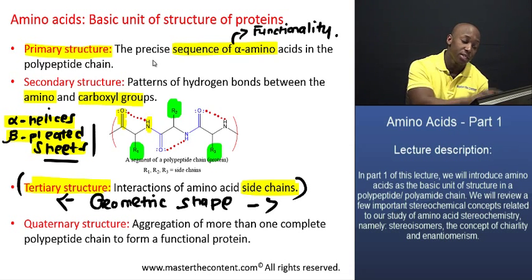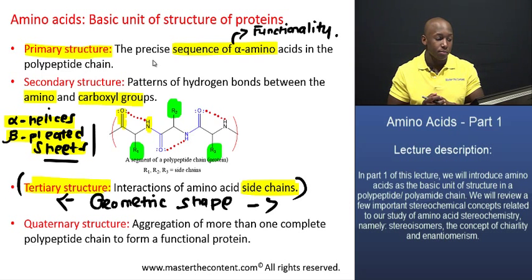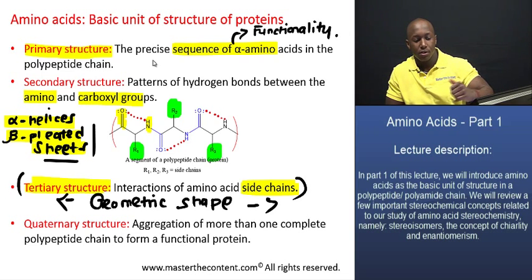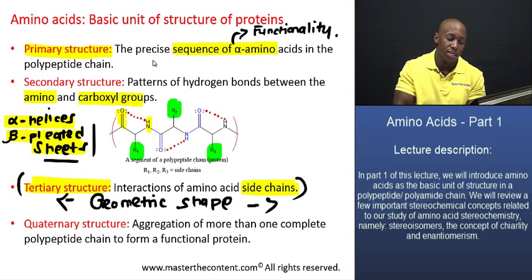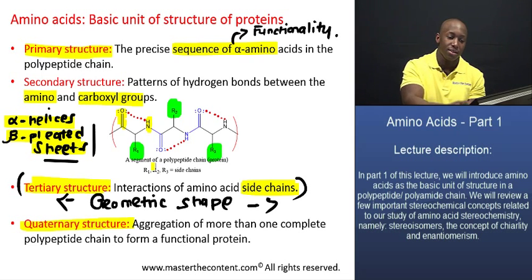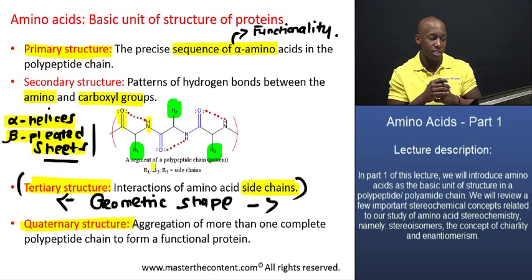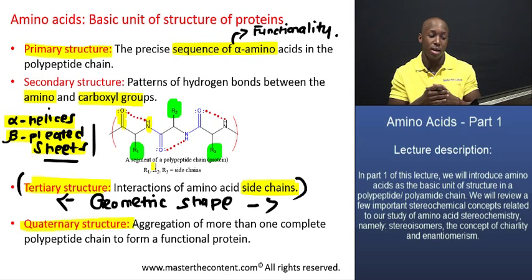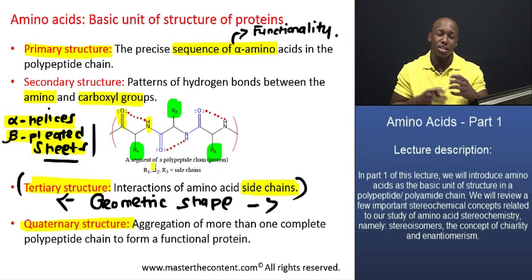As far as the quaternary level of structure is concerned, that basically results when you have more than one protein coming together, aggregating and conforming to form another complete functional protein. It's important to note that at any one of these levels of structural organization, you might have a completely functional protein — not every protein has to achieve the quaternary level of organization to be functional. We certainly have simpler proteins that are only up to the secondary or tertiary level of organization that carry out pretty complex functions.